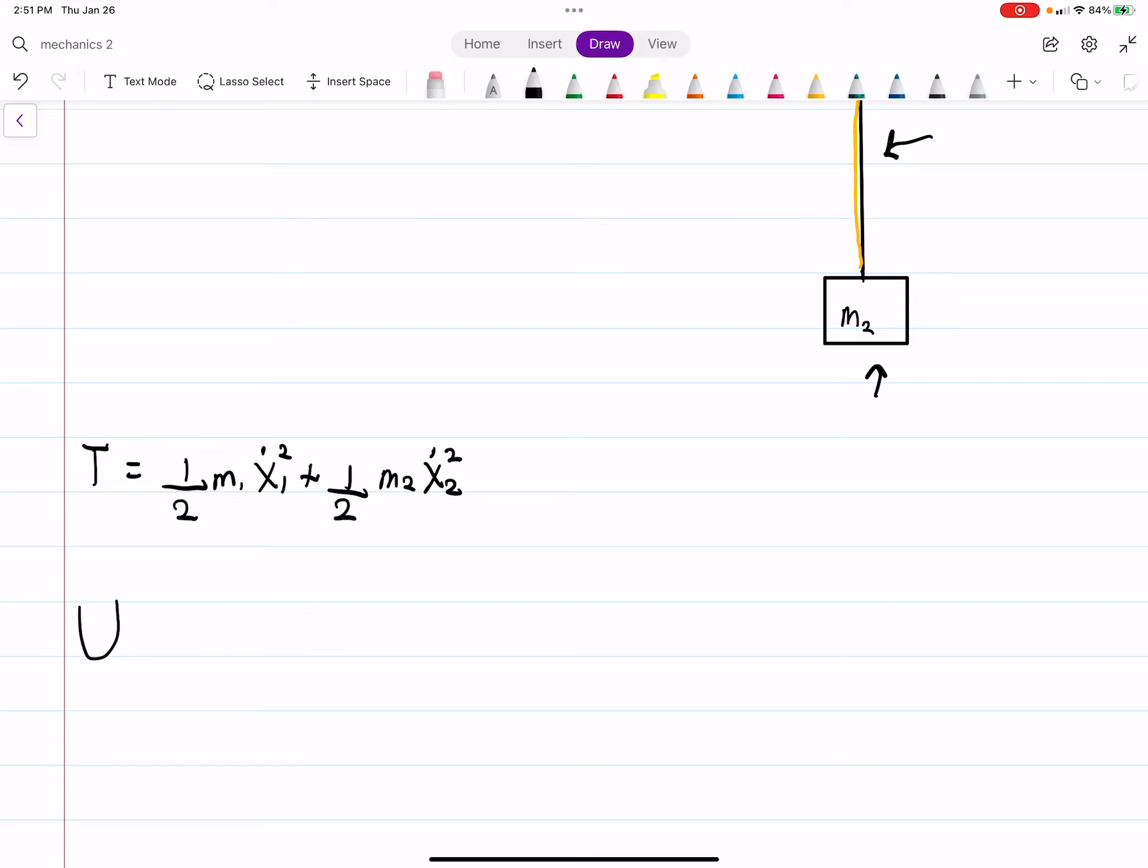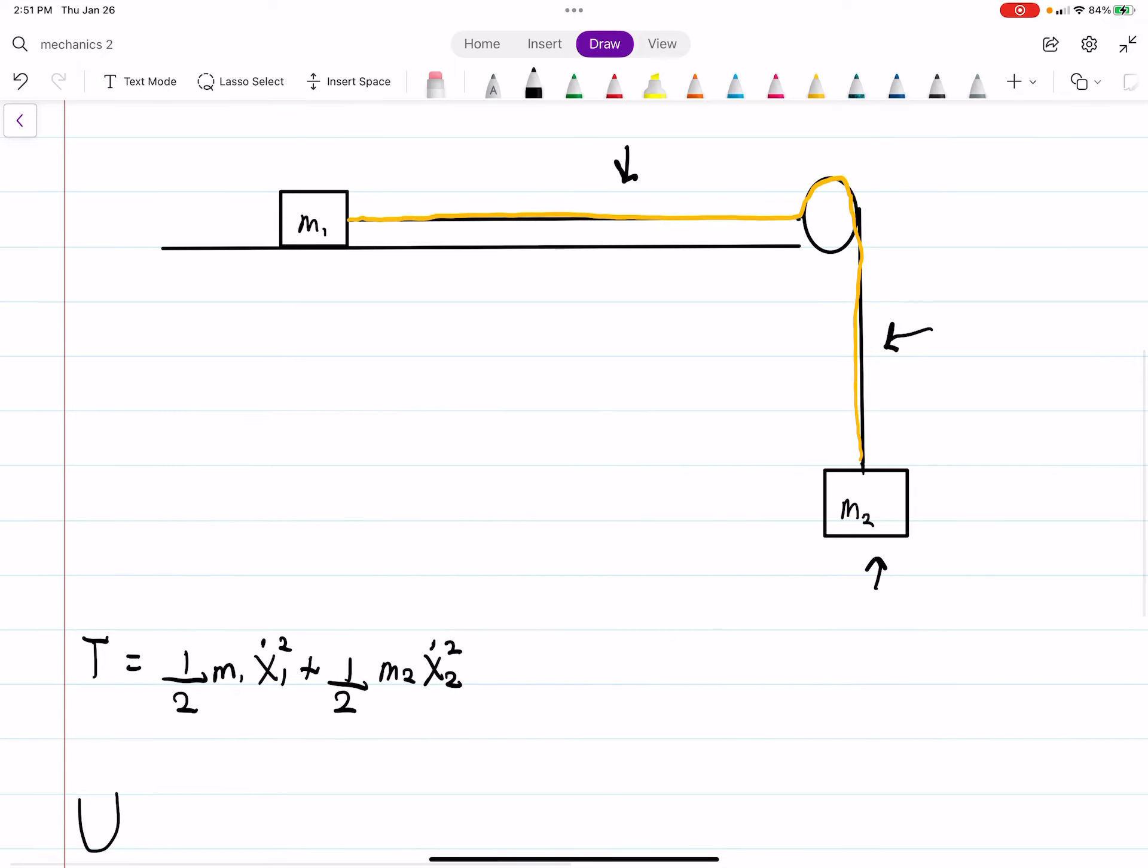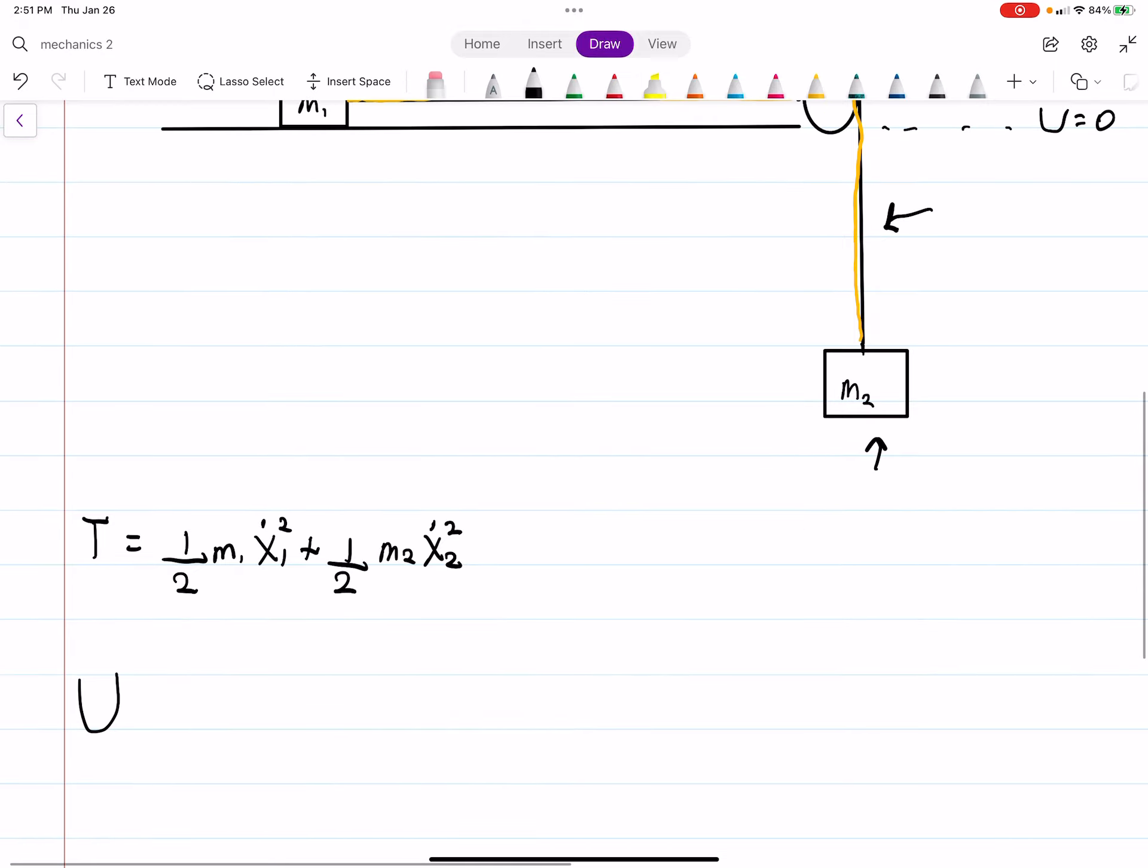The potential energy, well, it depends where we let our potential energy be zero. If we let this be U equals zero, just explicitly stating it out, then the only potential energy is coming from the mass 2, which is below. So it'll be minus M2 G, and then we'll just call it X. X determines how far down it is.